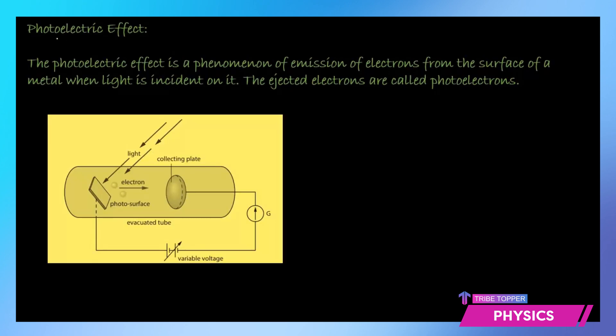So what is photoelectric effect? As the name suggests, if you split it into two parts, photo and electric. Photo is used for the light and electric is used for the electric current developed. The photoelectric effect is the emission of electrons from the surface of a metal when light is incident on it, and the ejected electrons are called photoelectrons.